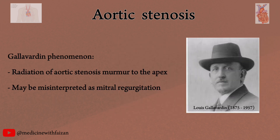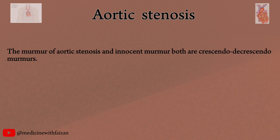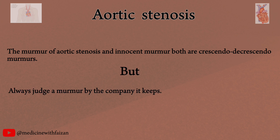The murmur of aortic stenosis may radiate to the apex as well, with a musical quality, giving the impression that the patient has mitral regurgitation when they do not. This effect is known as the Gallavardin phenomenon, named after the French cardiologist Louis Gallavardin. You may have noticed that the innocent murmur and the murmur of aortic stenosis are both systolic crescendo-decrescendo murmurs. But always judge a murmur by the company it keeps.